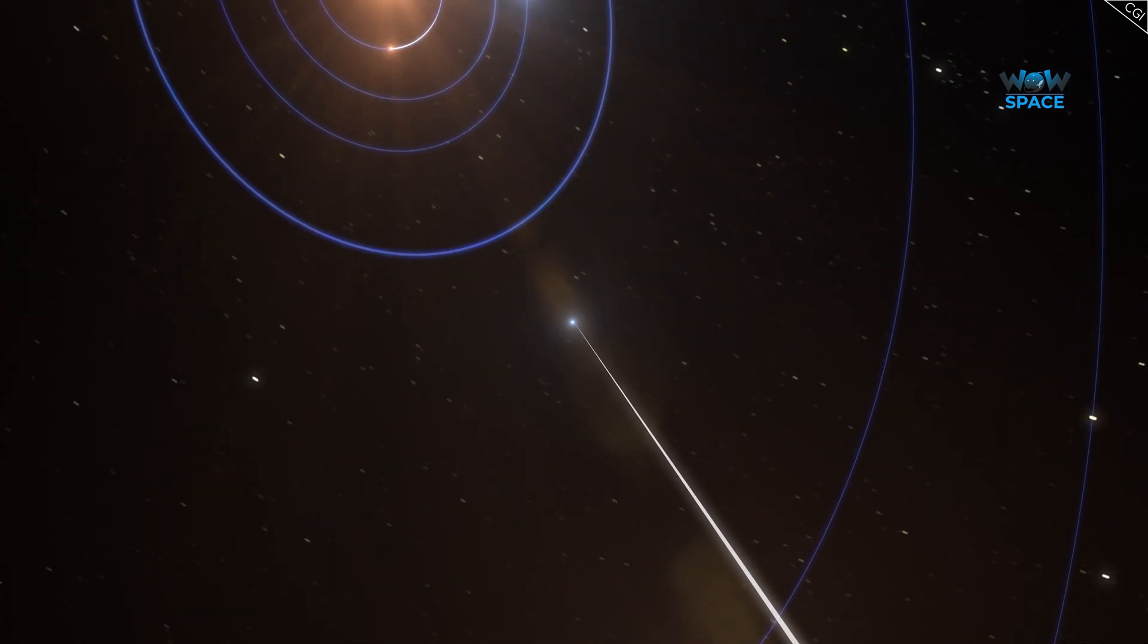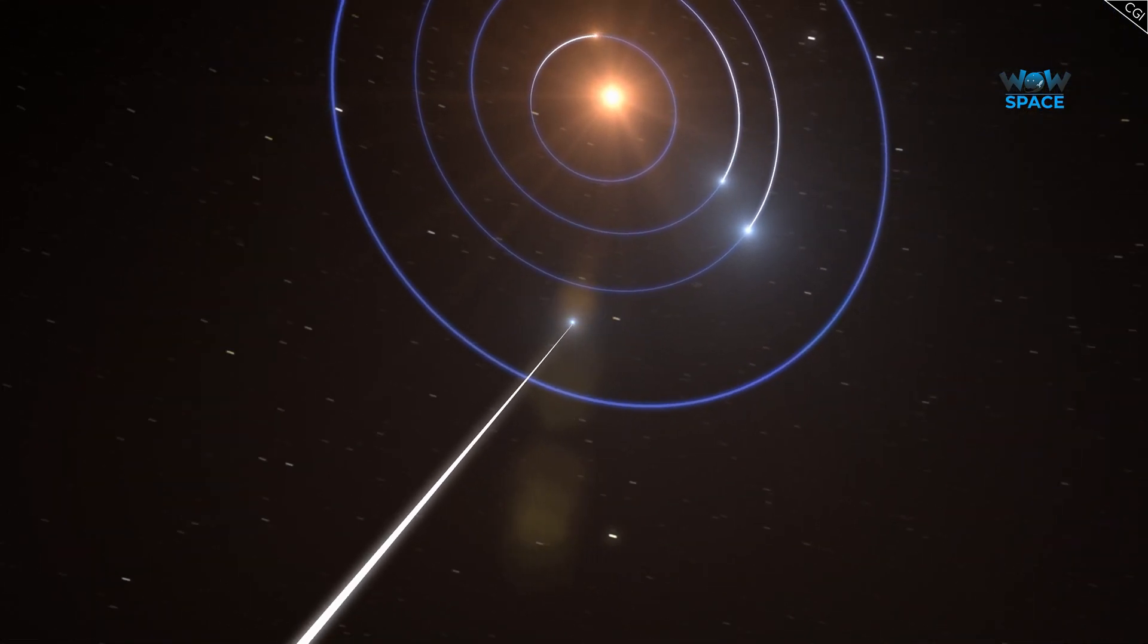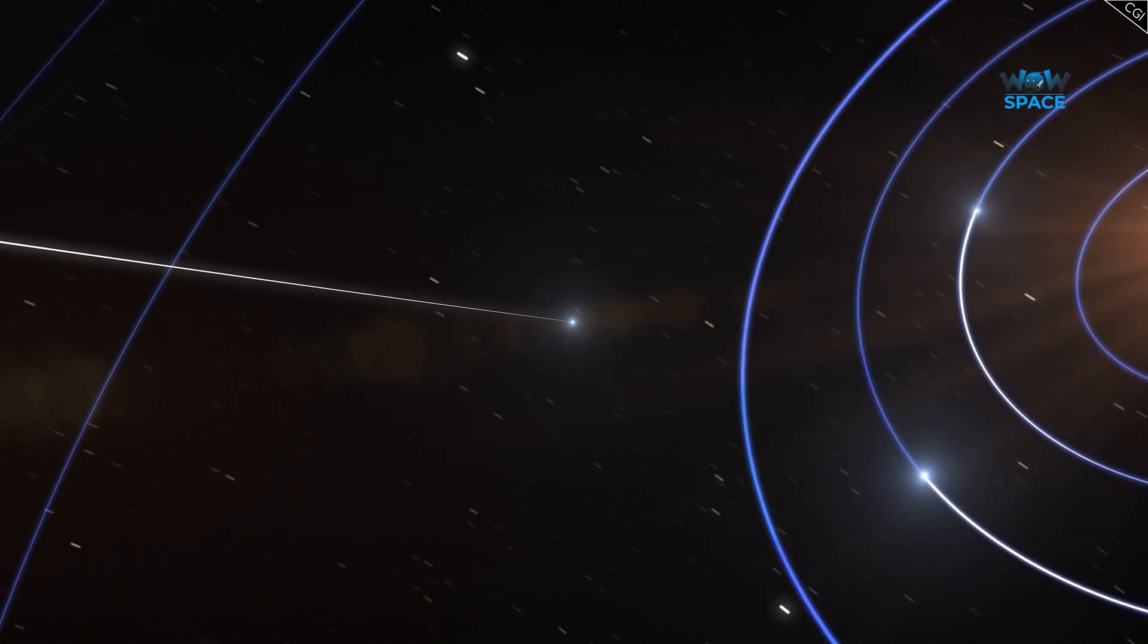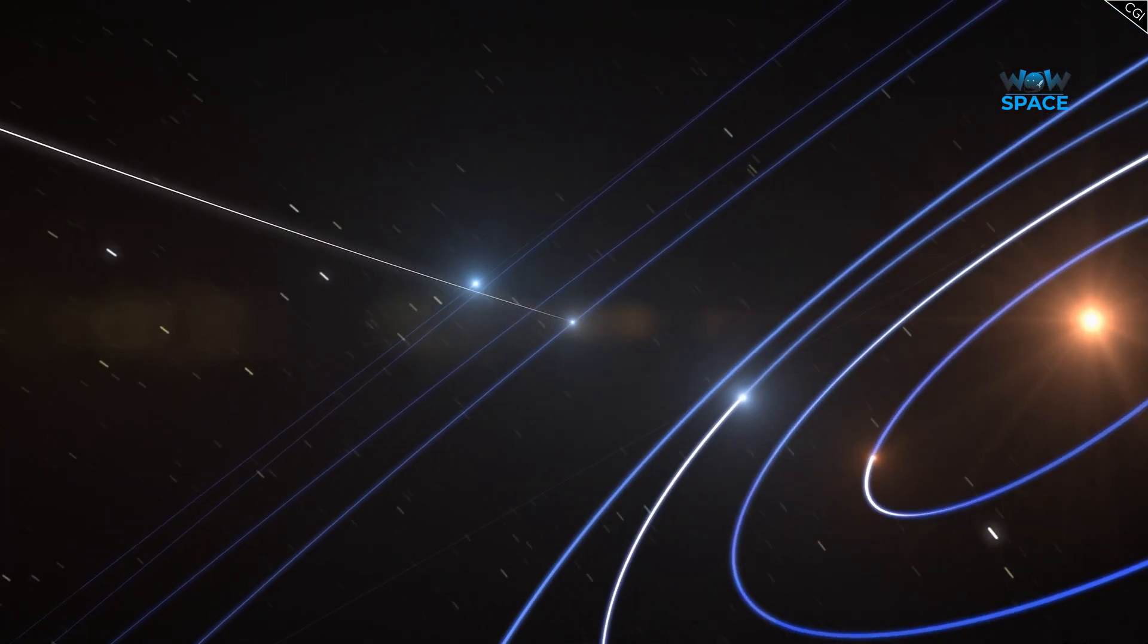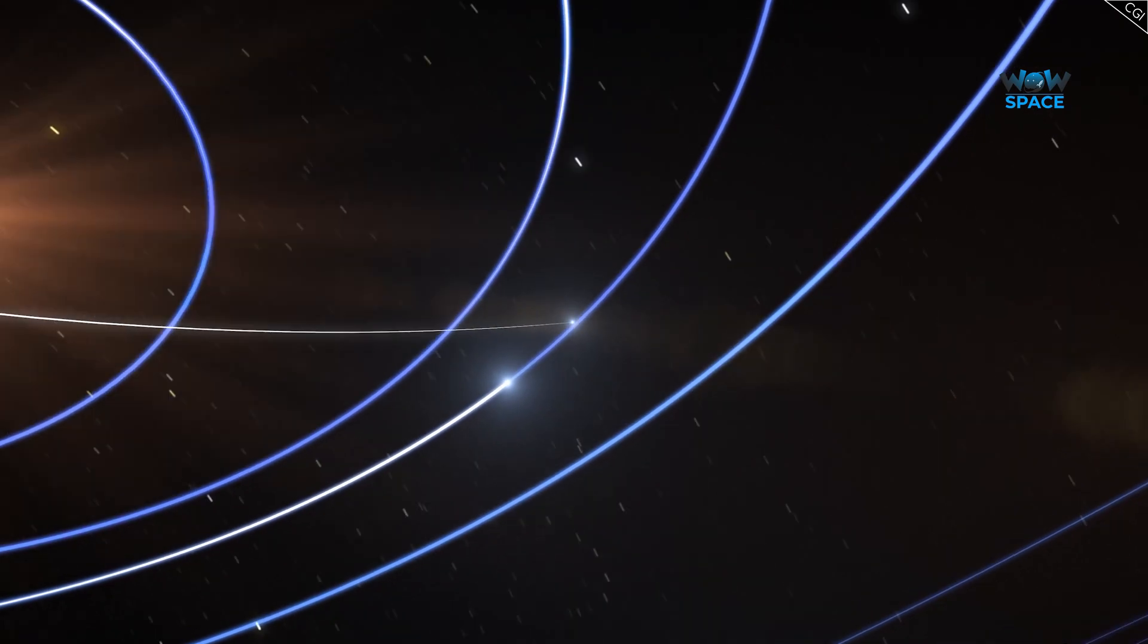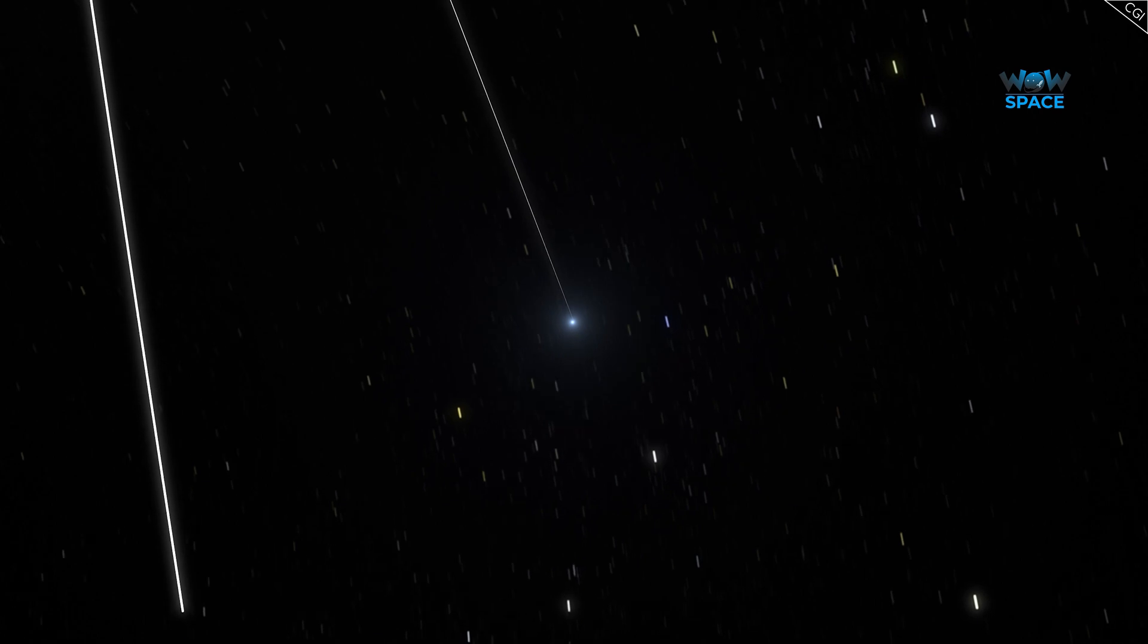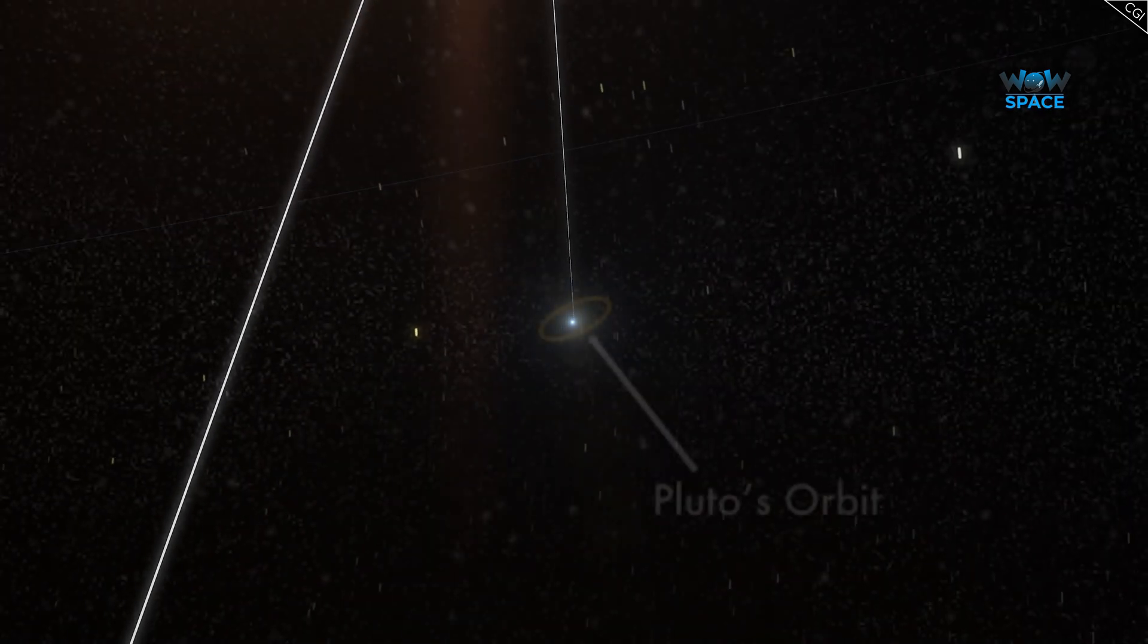That's why astronomers currently think the furthest objects can safely orbit the Sun is up to a maximum distance of 1 light year, even though the Sun's hill sphere might stretch out for 2-3 light years. So, what's out there at that distance? Anything at all?